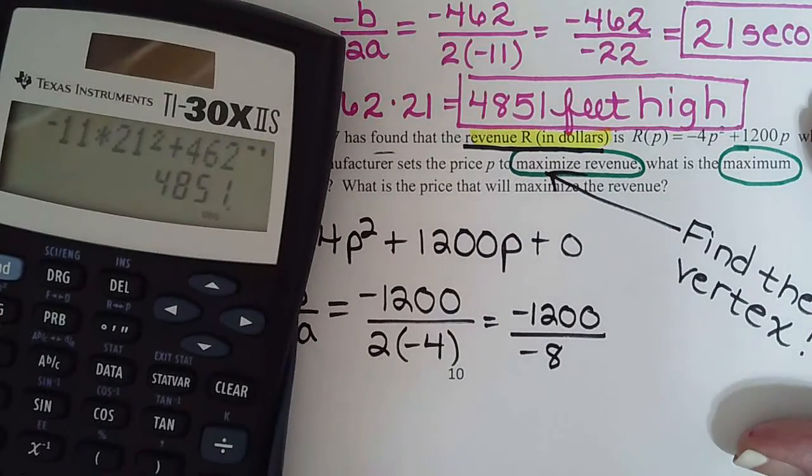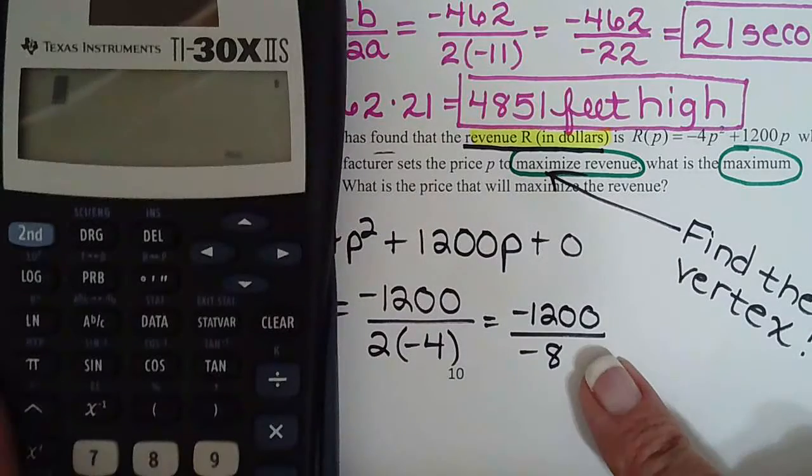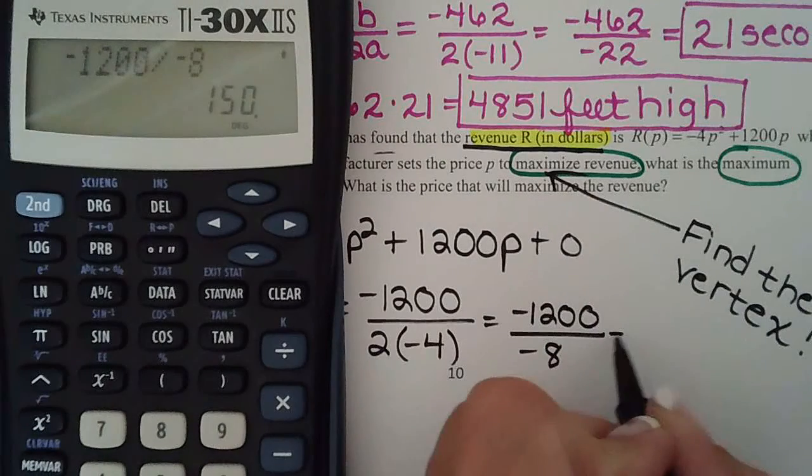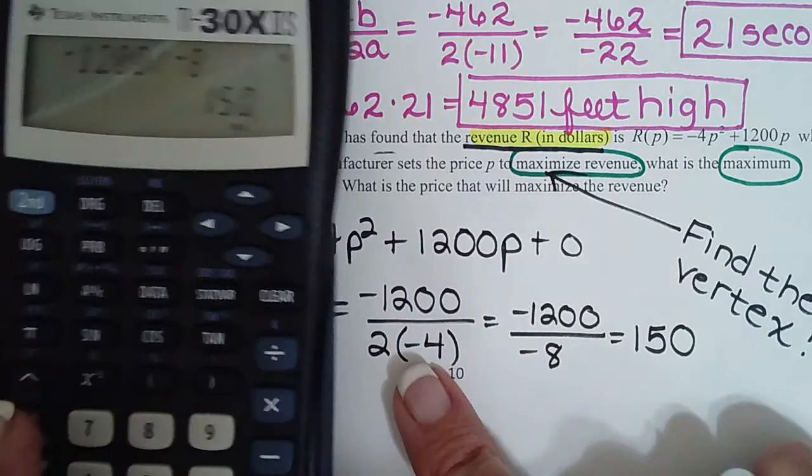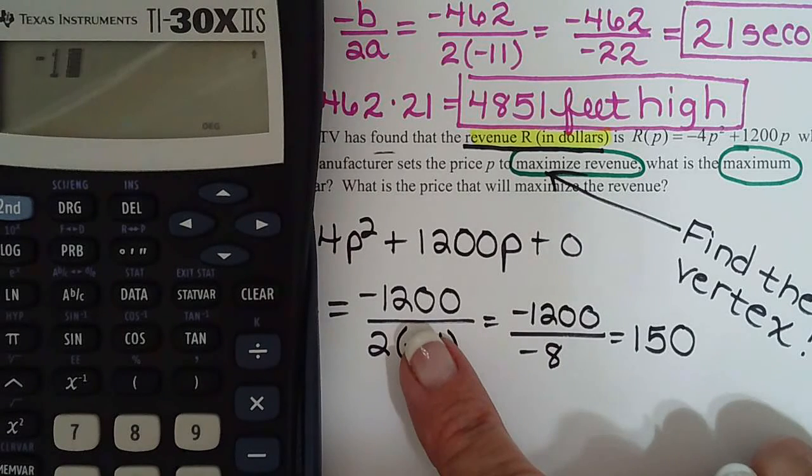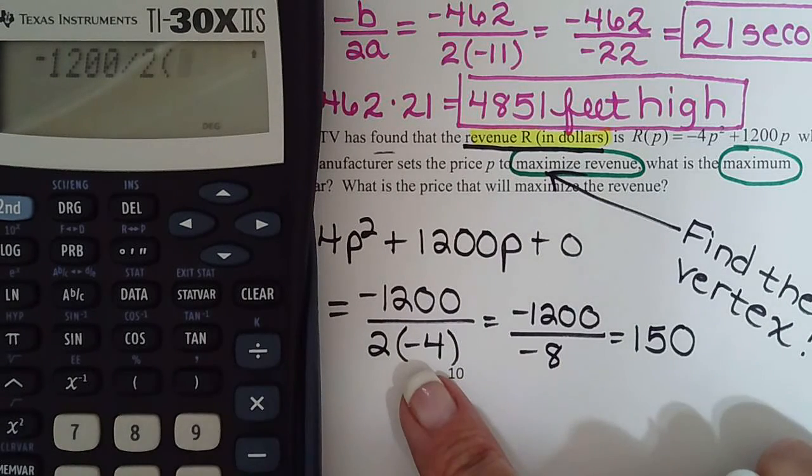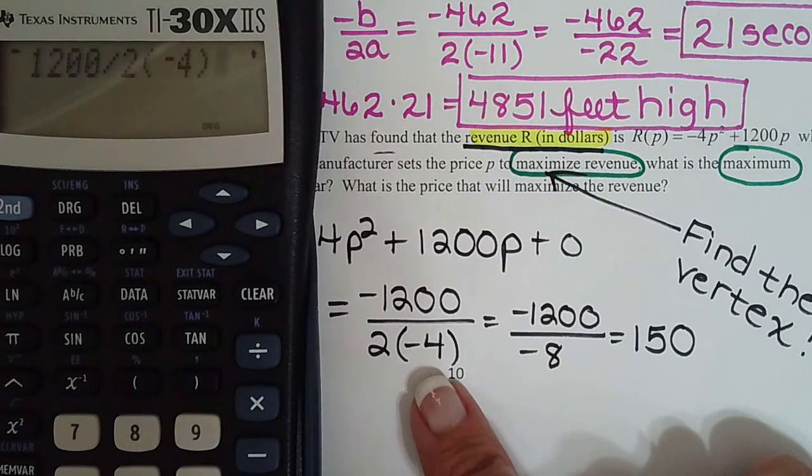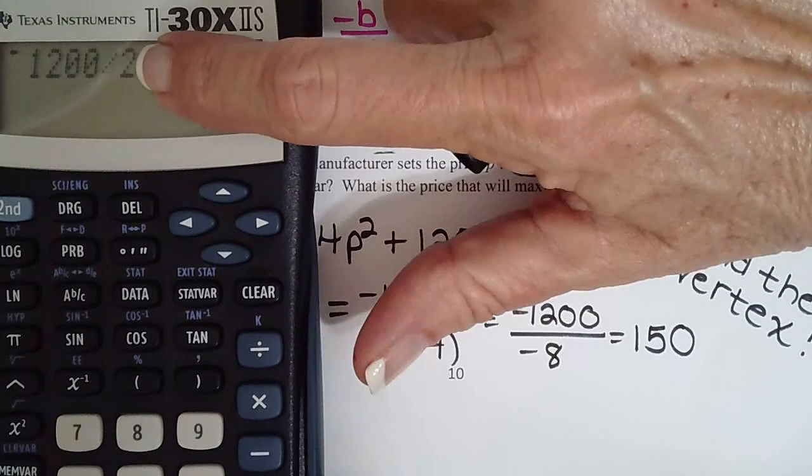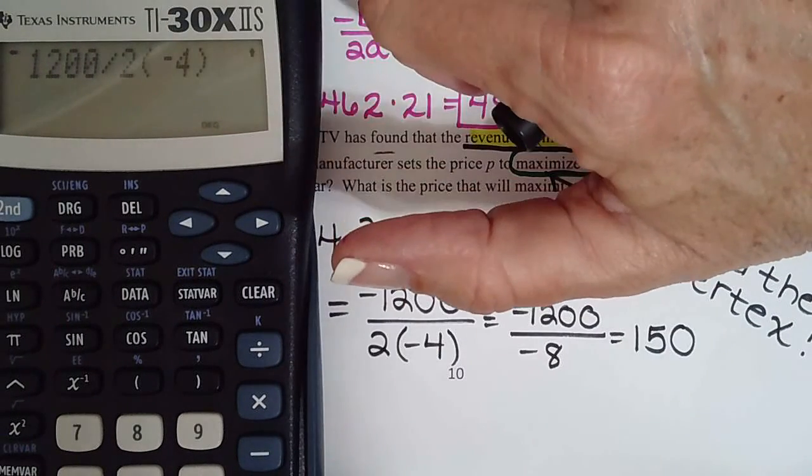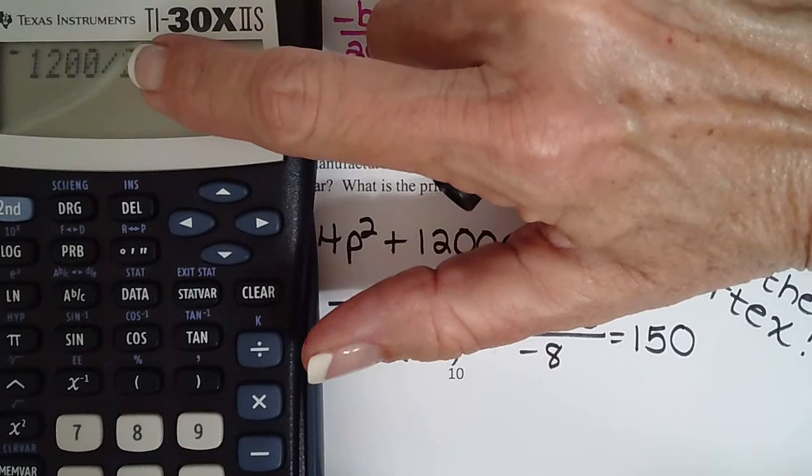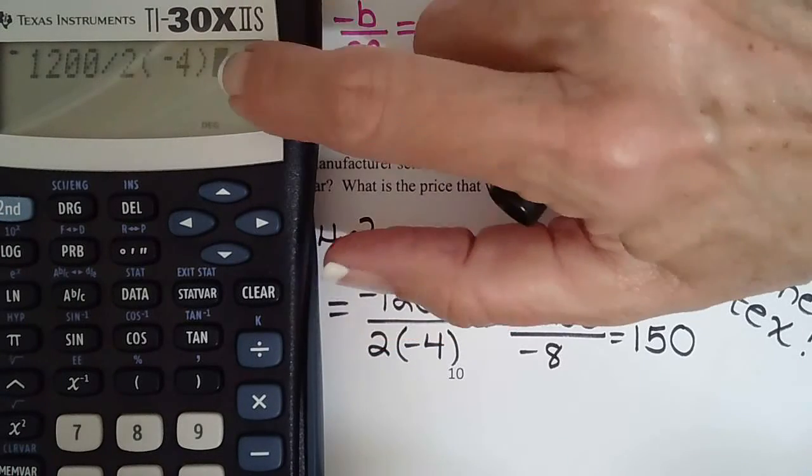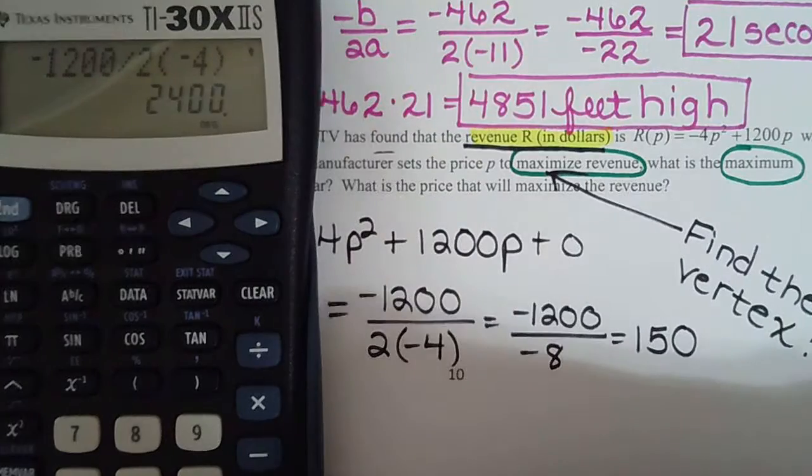So again, don't type it into your calculator yet. Work out the bottom first, then type it in, because you'll see - let me show you how you will not get the right answer. So the correct way to do it would be to do negative 1200 divided by negative 8, and that's 150, and we'll label it in a second. But this is what a lot of students do on the test, so watch my calculator screen. They do negative 1200 divided by 2, parentheses negative 4, and they go, oh it looks just like what I have written here. Well it's not.